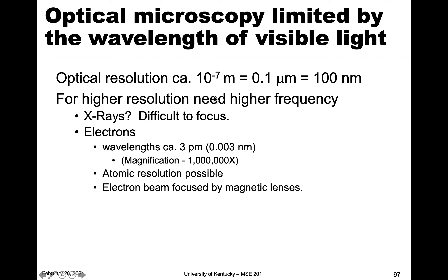A lower wavelength also means higher frequency. We've talked about x-rays in x-ray diffraction — we're able to probe structure with x-rays because the wavelength was similar to atoms. However, x-rays prove to be difficult to focus, and imaging is all about focusing. We can use electrons instead. If we think of them as both a particle and a wave, their wavelengths are very small — about three picometers, which is 0.003 nanometers.